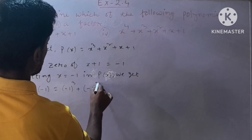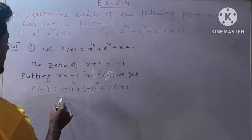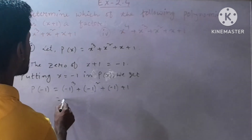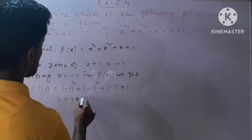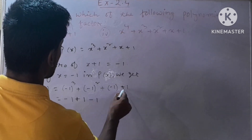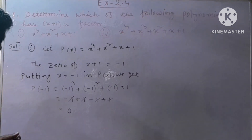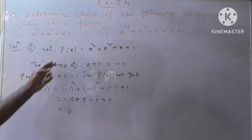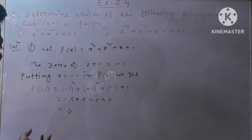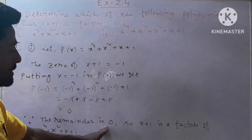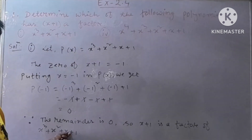In place of x we put minus 1, whole square. In place of x we put minus 1, plus 1. That equals minus 1 cube — minus multiplied 3 times gives minus 1; plus minus 1 whole square — minus multiplied 2 times gives plus 1; plus minus 1; plus 1. So plus 1 minus 1 plus 1 minus 1 cancel, giving 0. Since after putting x equal to minus 1 in the given polynomial the result is 0, the remainder is 0. Therefore x plus 1 is a factor of x cube plus x square plus x plus 1.